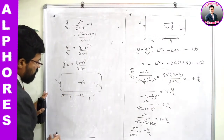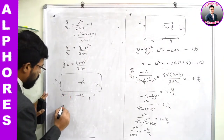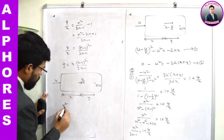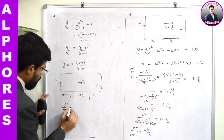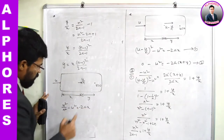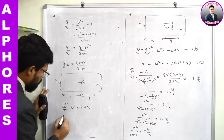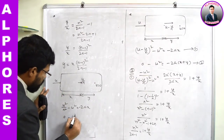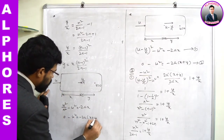Writing v² - u² = -2ax as equation for distance x: the final velocity is u/n, so u²/n² - u² = -2ax. And corresponding to distance x + y, final velocity is 0: 0 - u² = -2a(x + y).